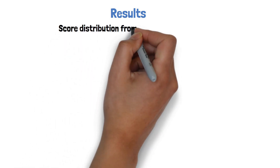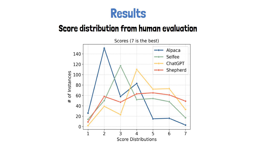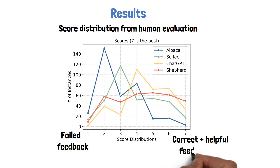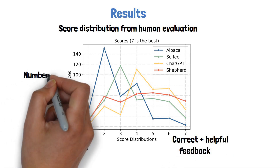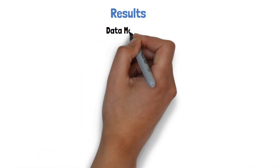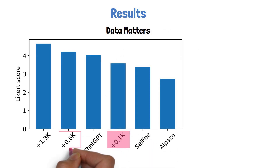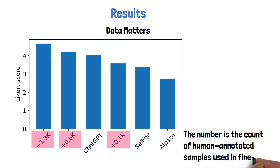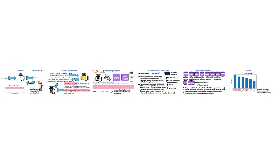Looking at the score distribution from human evaluation, the x-axis is the score for generated feedback, where 1 or 2 means complete failure and 7 means the feedback is correct and very helpful for further improvements. SHEPHERD performs relatively well and specifically tops with a score of 7. The next chart shows that data matters: three versions of SHEPHERD are shown where the number represents the count of human annotated samples used in fine-tuning, demonstrating that adding more high-quality samples is important. Additionally, Selfie was fine-tuned on a much larger dataset than SHEPHERD, which implies the importance of dataset quality as well.